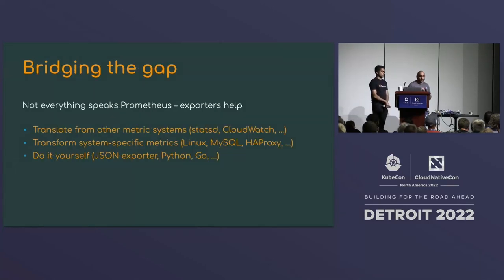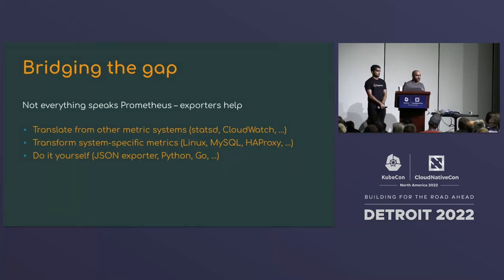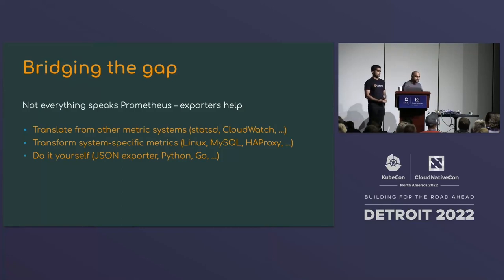The exporter ecosystem is massive. Prometheus is pull-based, so it needs to scrape metrics from systems that may not speak the Prometheus protocol. There are exporters for almost everything — including a speedtest.net exporter and a Fritz!Box router exporter. The ecosystem is so large that you can almost always find an exporter for any popular service you want to monitor.